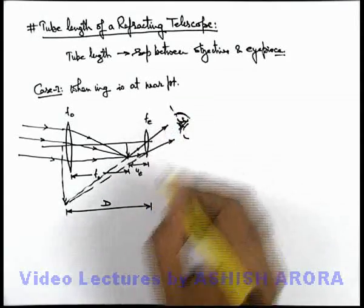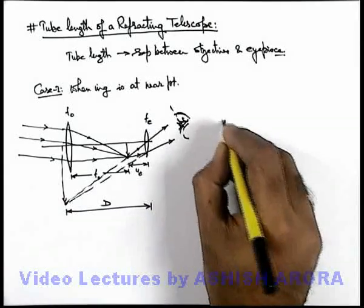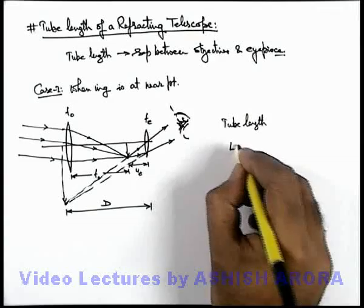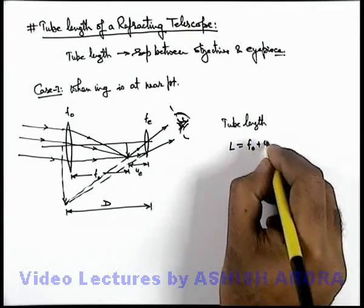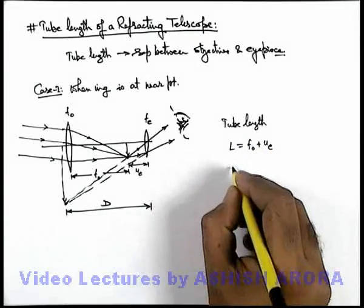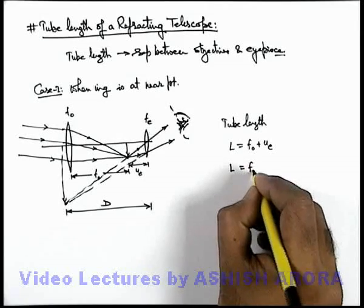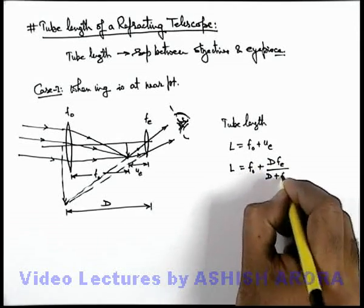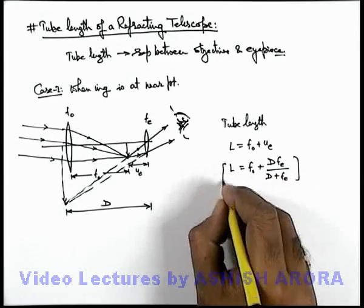Now in this situation, we can see the value of tube length. We can write it is equal to f_o plus u_e. And the value of u_e we've already discussed in previous section, so this is written as f_o plus d f_e by d plus f_e. So this will be the tube length.